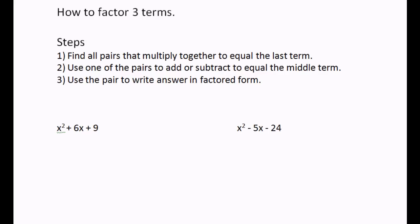Welcome to this video on how to factor three terms when the number in front of x² equals one. The steps are: step one, find all pairs that multiply together to equal the last term — the last term for the first one is nine; step two, use one of these pairs to add or subtract to equal the middle term, which is 6x.